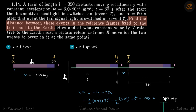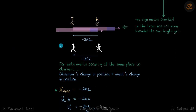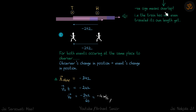Now let's discuss the significance of the negative sign. This means there is overlap — the x displacement is actually backwards. The later event's position is behind the first event, meaning the train has not yet traveled its own length. When the second event happened, the train had only moved a little bit, so the tail light event occurred behind the headlight event. That's why we get a minus sign.